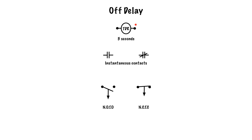Here we have a typical off delay. We have a TDR coil — time delay relay coil — with a timing function of five seconds. There are some normally open contacts and some normally closed contacts; those are instantaneous. The moment TDR energizes, these contacts close and these contacts open — it ignores the time. What doesn't ignore the time are the time contacts down here: a normally open time-to-open contact and a normally closed time-to-close contact.